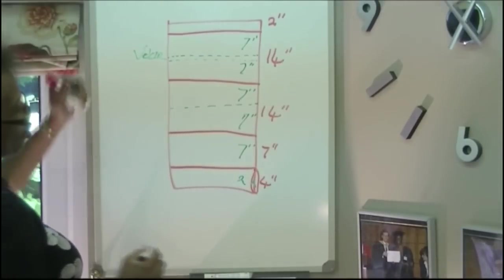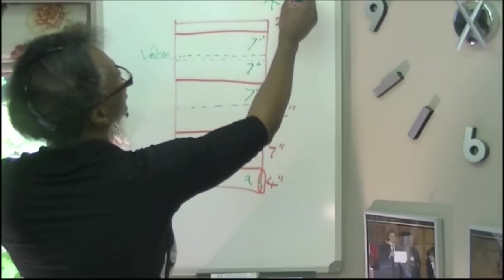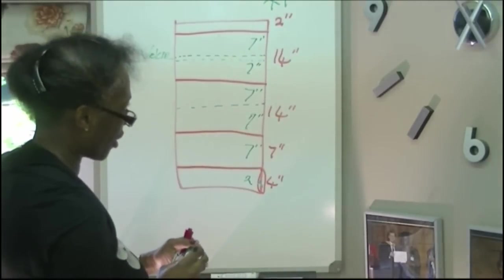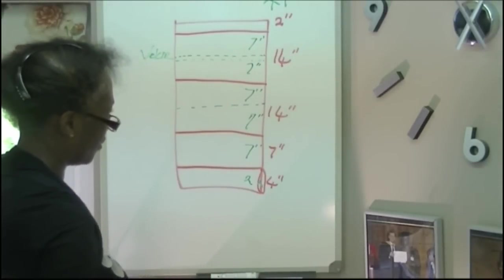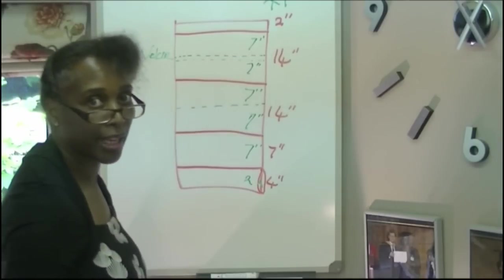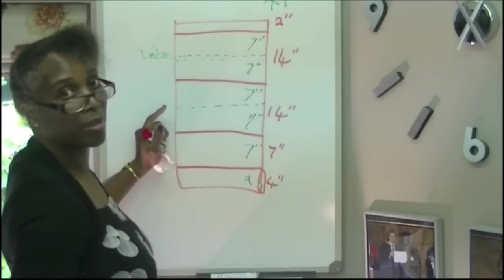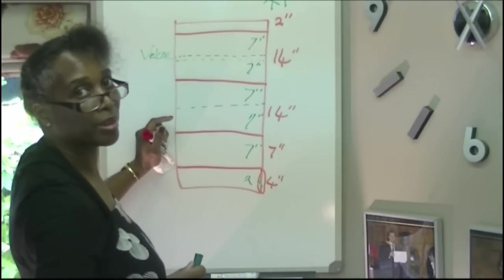And that's going to be our Roman blind. And I think they all added up to 41 inches of fabric. So that's going to be our Roman blind today, but it's a dummy. So you won't be able to pull this Roman blind up and down.